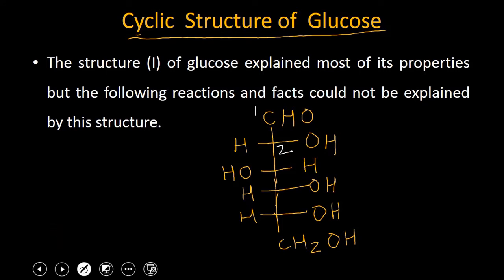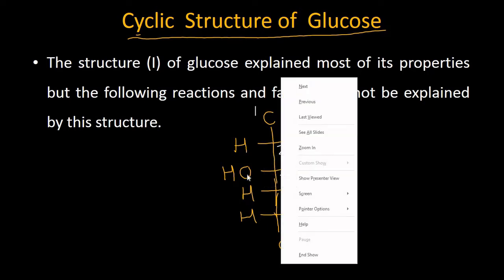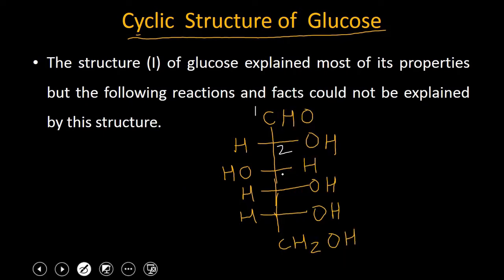This is the structure of glucose. The first carbon atom has an aldehyde group. The second carbon atom has H on the left-hand side and OH on the right-hand side. The third carbon atom has the reverse arrangement. The fourth and fifth carbon atoms have identical arrangement of atoms. And the sixth carbon atom is present in the form of CH₂OH. This structure explains most of the properties of glucose, but some reactions and facts cannot be explained by it.